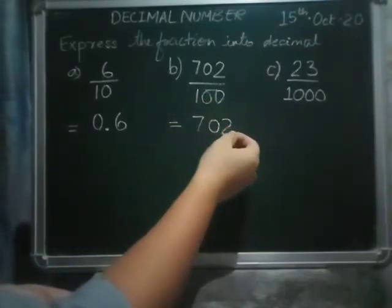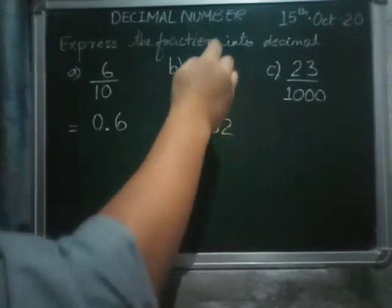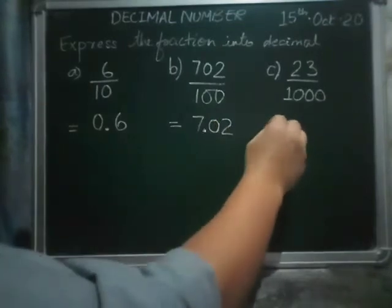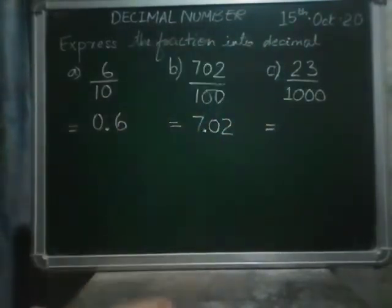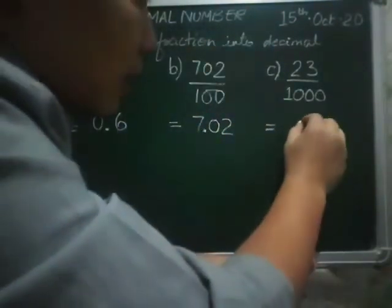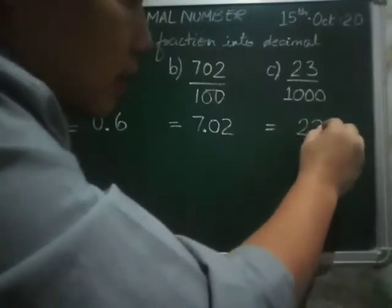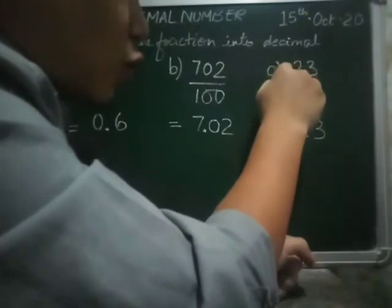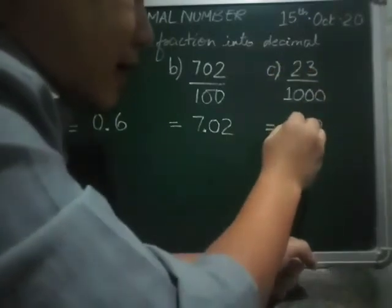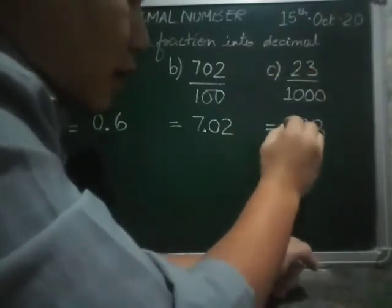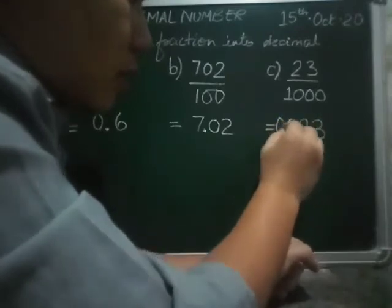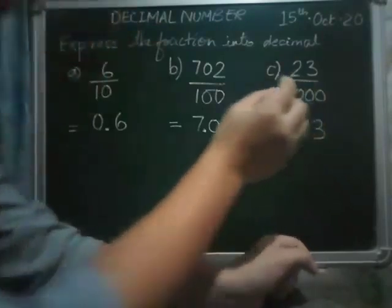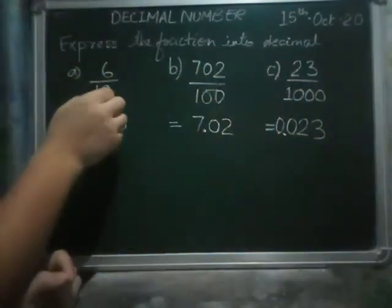So we will write the decimal point before two zeros, giving us 7.02. Again, in this case there are two numbers only, but there are three zeros. So if there is no number here, we can write zero also. So we can write one more zero and get 0.023. So the idea is if there is...